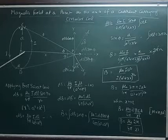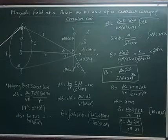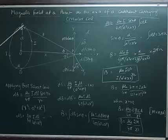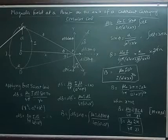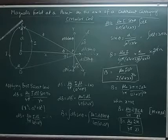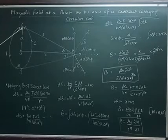For that, we assume a small elementary portion of this current vector called dL. As we know, the Biot-Savart law is applicable for a small element called an ideal segment.